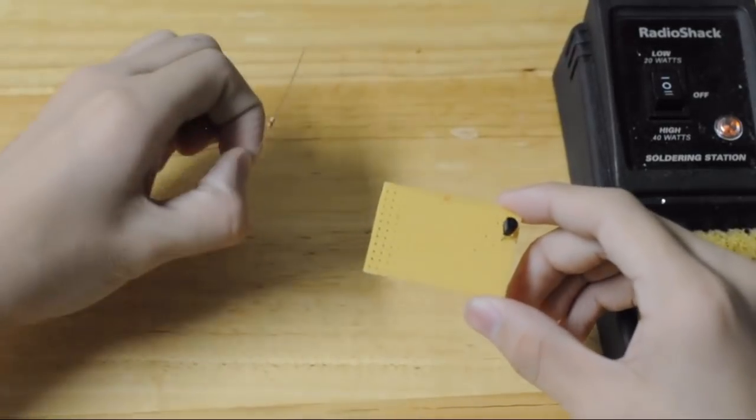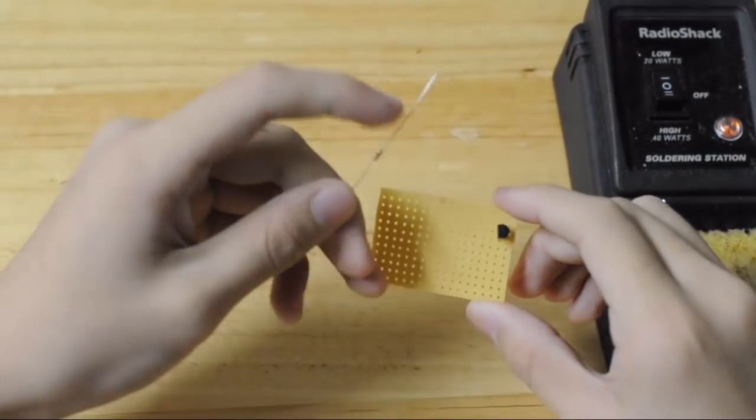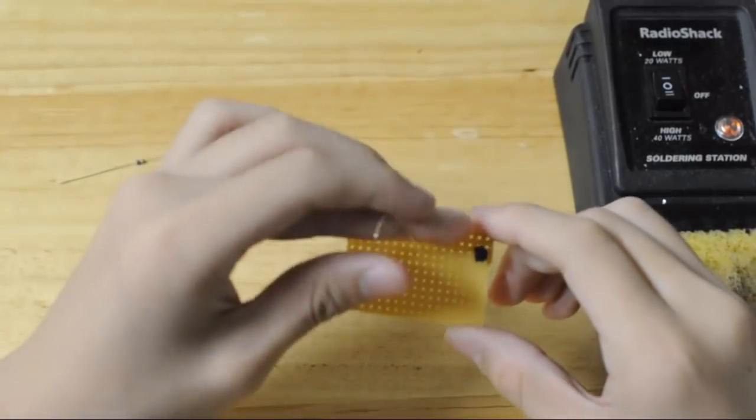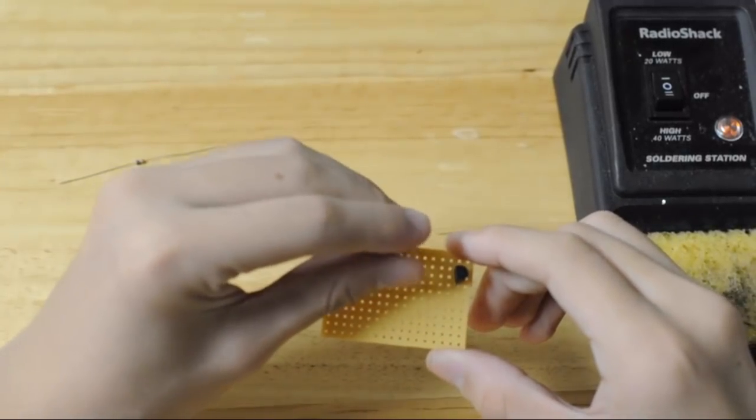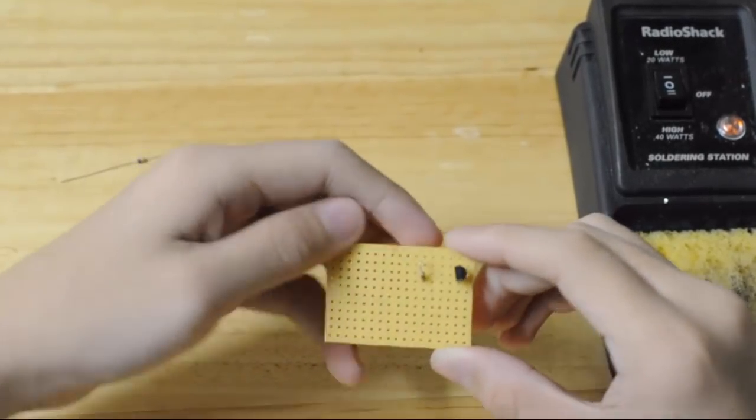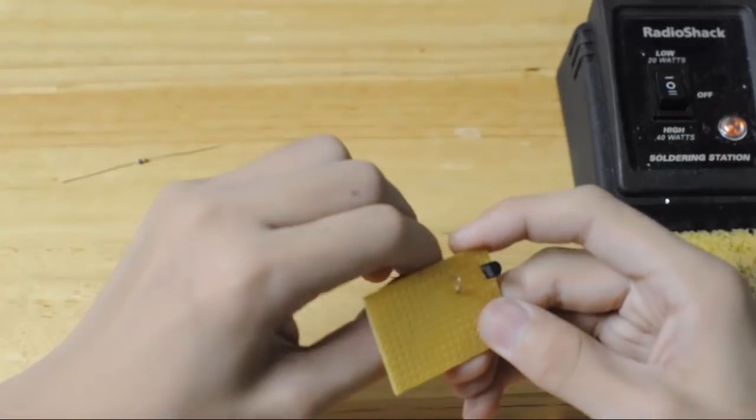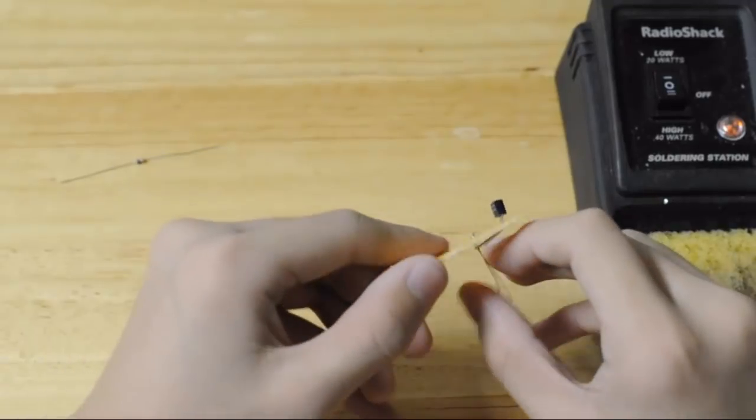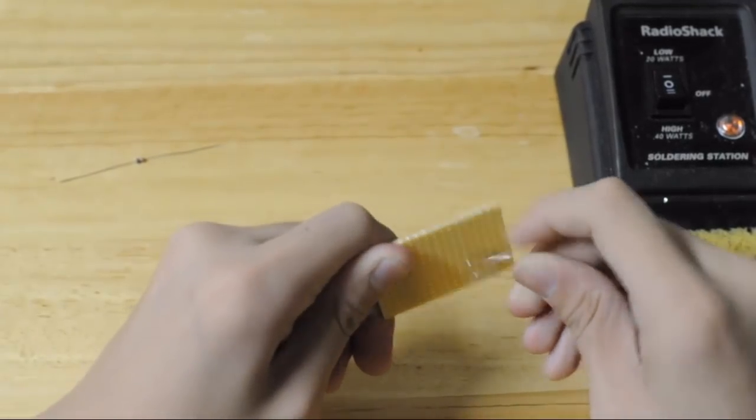Next what you need to do is take the 33 ohm resistor, and you need to put it a couple of holes in front of the transistor. Once you've inserted it, pull the legs so that it stays in place. Now bend the resistor legs down so that it doesn't wiggle around.